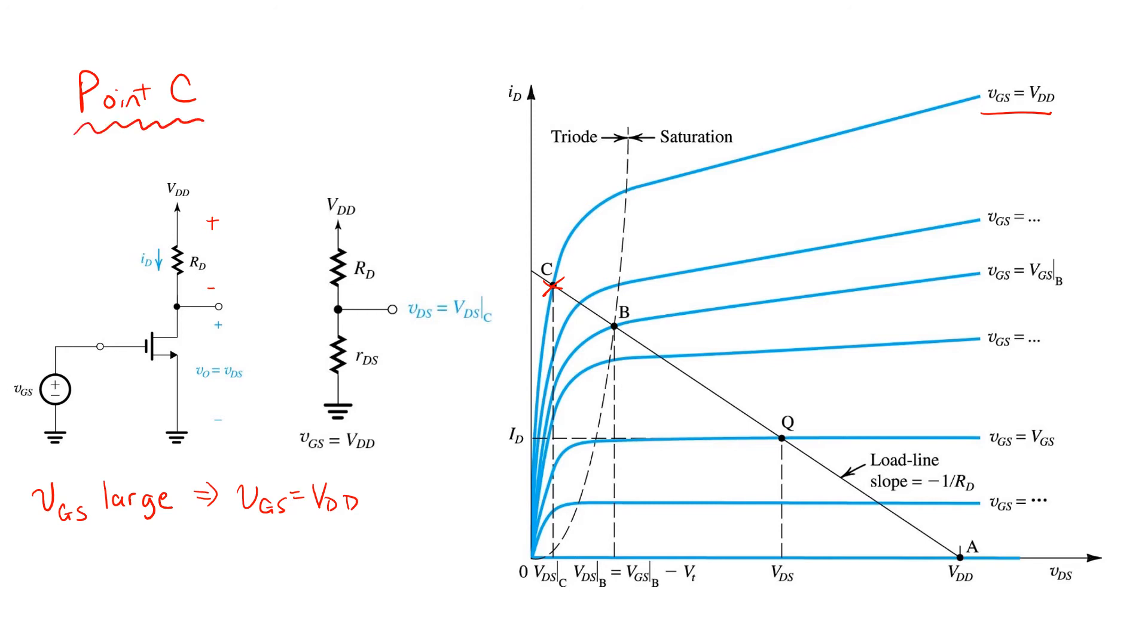which is in the portion of the curve representing triode region for the MOSFET. In triode, the MOSFET can be modeled by a resistance RDS,